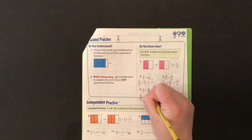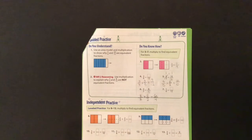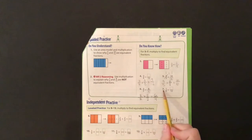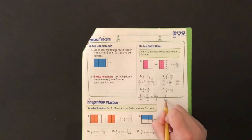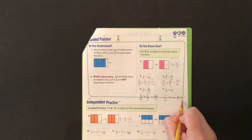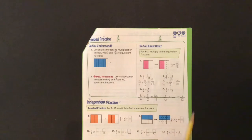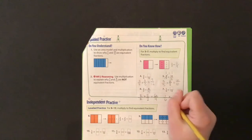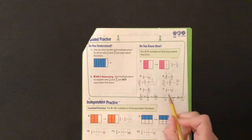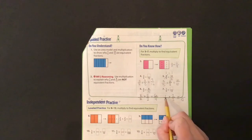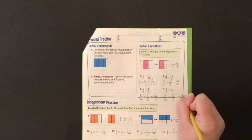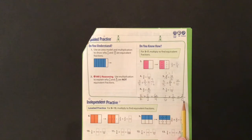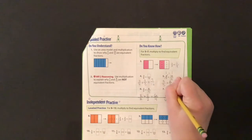1 sixths, number 7. 1 sixths times something equals something with 12 as a denominator. 6 times 2 equals 12. So I can think, what is 1 times 2? And the equivalent fraction is 2 twelfths.